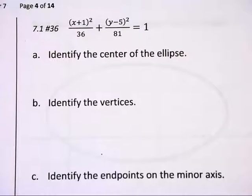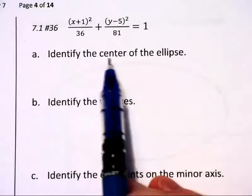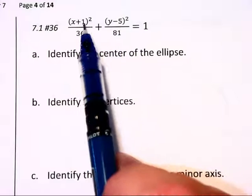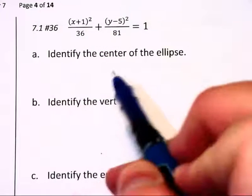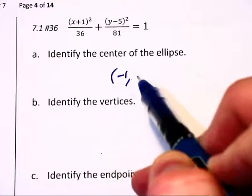We are going to go through the same steps in this next problem. The center of the ellipse can be found by looking inside those parentheses there. It will be located at (-1, 5).